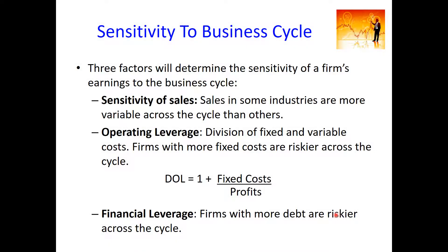Starting with sensitivity to the business cycle, there are three factors that affect how sensitive an industry will be. First is the sensitivity of sales — the extent to which sales in an industry co-vary with the business cycle. For example, luxury goods or premium cars will have very high sales when the economy is expanding because people have more disposable wealth, but their sales decrease quite significantly when the economy contracts. This greater sensitivity of sales across the cycle demonstrates that these industries are more risky.